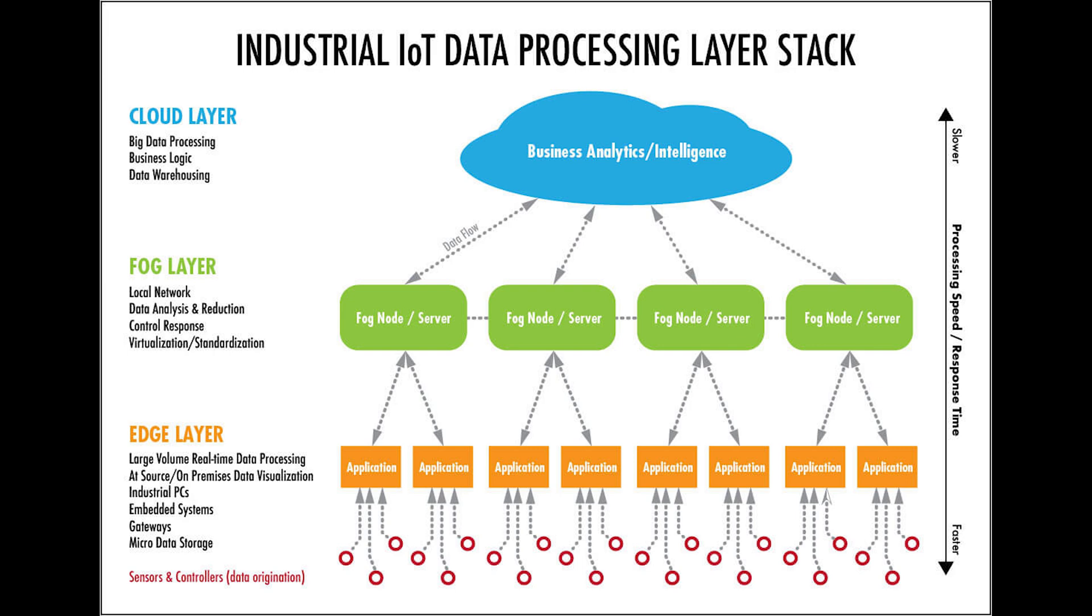Fog computing uses a centralized system that interacts with industrial gateways and embedded computer systems on a local area network, whereas edge computing performs much of the processing on embedded computing platforms directly interfacing to sensors and controllers.